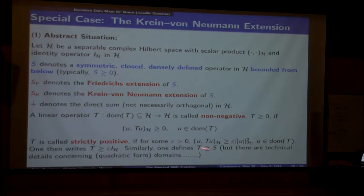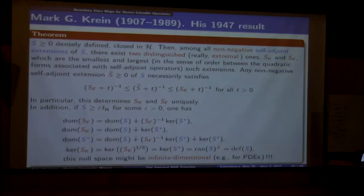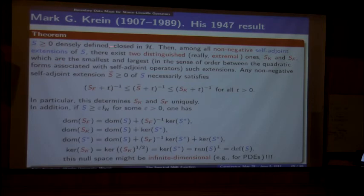A warning: you can introduce an order between operators, but you have to be very careful—you have to do this in the sense of quadratic forms. It's much easier to order by using resolvents, because then you go to the bounded situation and there is no issue. Here's a famous theorem that Mark Krein proved in 1947. The setup: we have a non-negative, densely defined, closed, symmetric—not self-adjoint—operator. Among all the non-negative self-adjoint extensions, there are two distinguished extremal ones: the Krein–von Neumann and the Friedrichs extension.